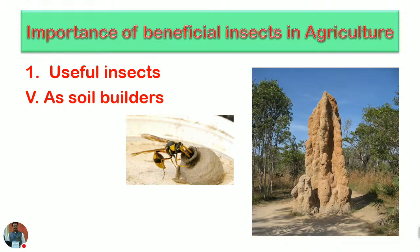Insects also act as soil builders. Dung flies and termites utilize their skills and social behavior for building up the soil, making large structures and continuing their life cycle through those structures.